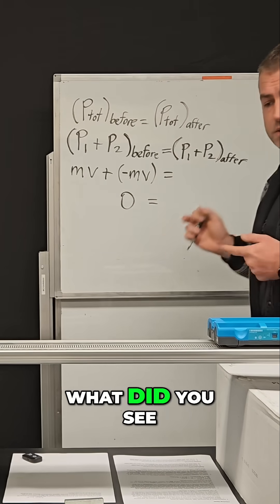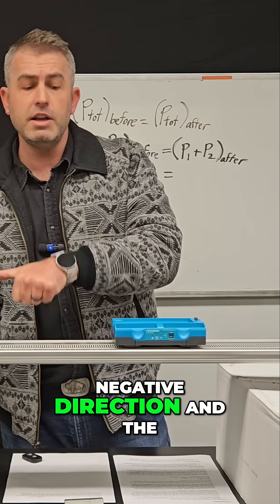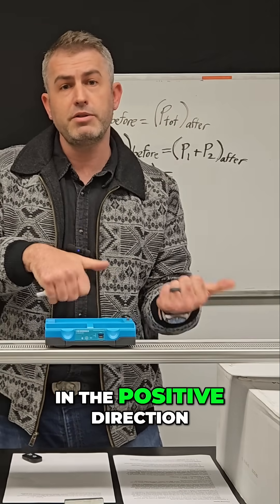On the after side of the equation, what did you see? One more time here. This time, the yellow car goes in the negative direction, and the blue car went in the positive direction.